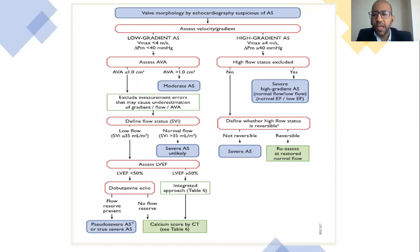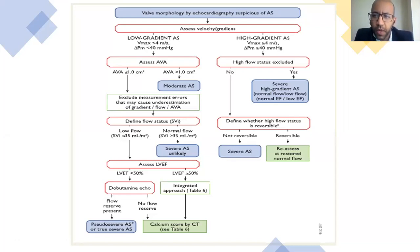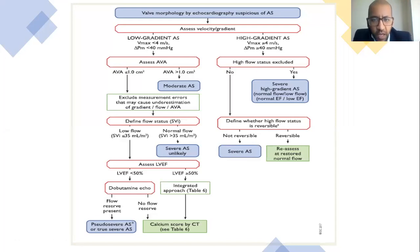From the ESC 2017 valvular heart disease guidance, when there is discrepancy between gradient and valve area, we first assess the gradient. If the maximum velocity is more than 4 m/s and mean gradient more than 30 mmHg, we need to exclude high-flow states such as Paget's disease, anaemia, thyrotoxicosis, or pregnancy. If excluded and the readings are correct, this patient has high-gradient severe AS.